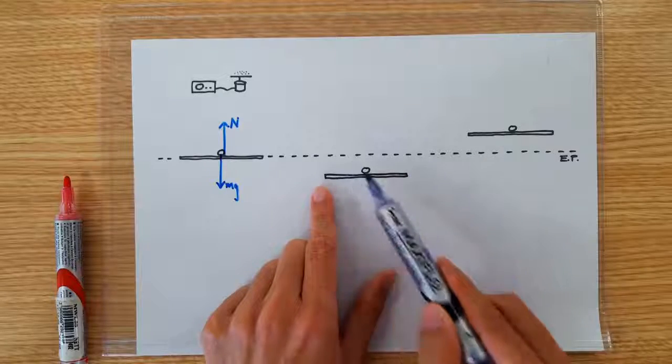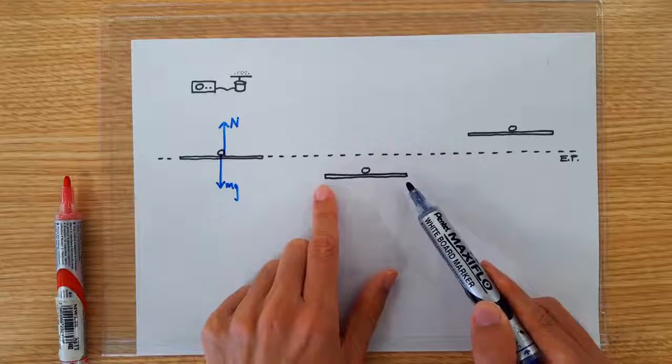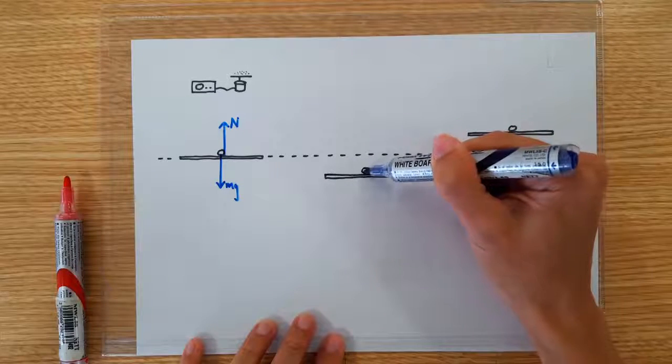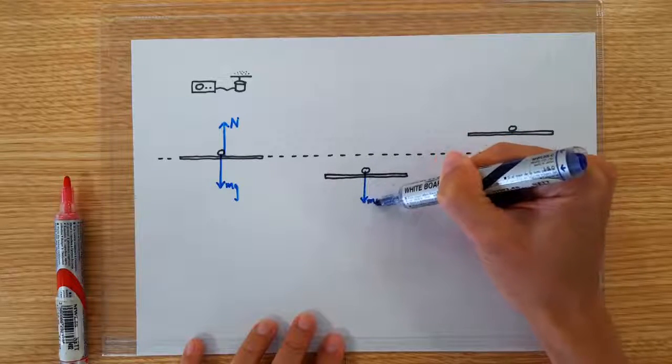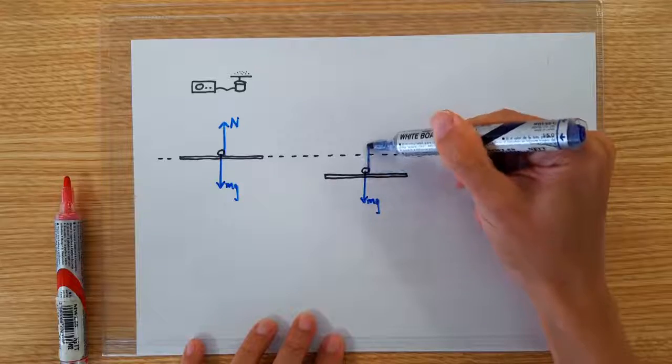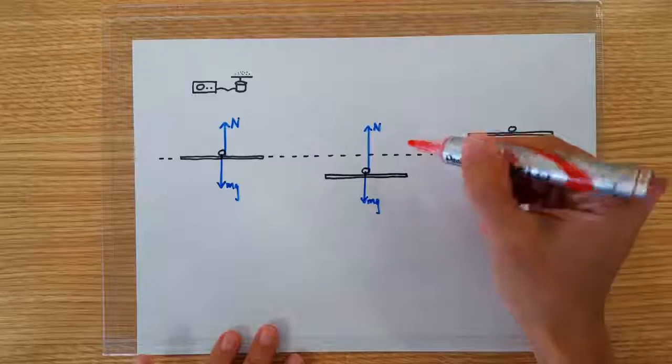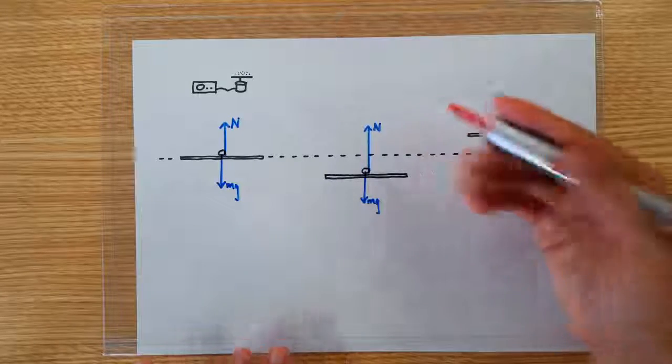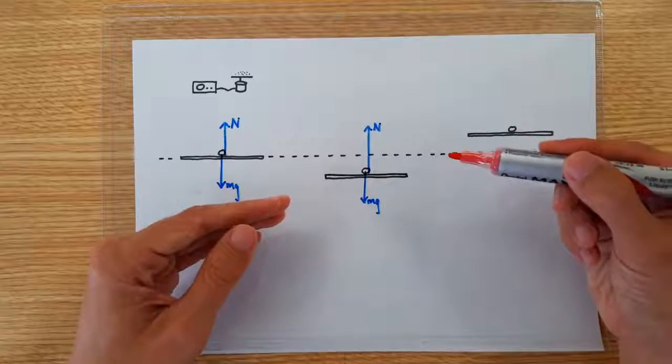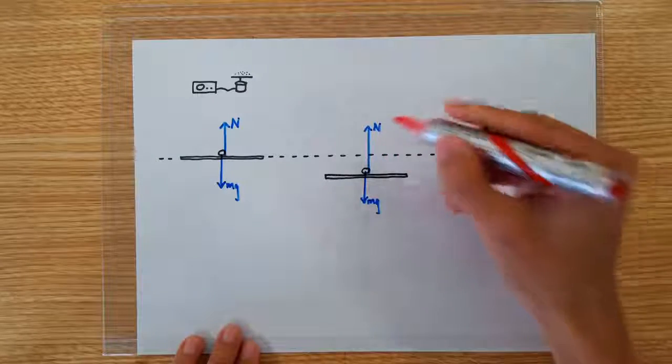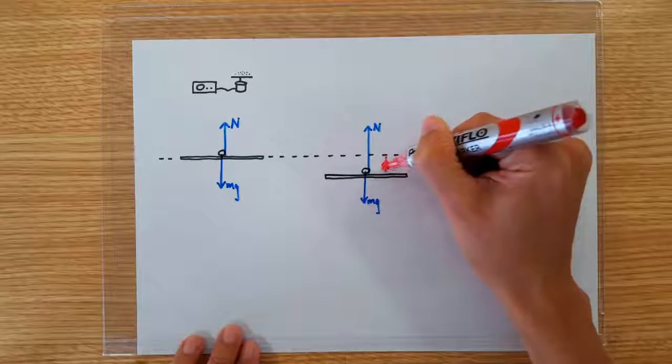However, if the plate is displaced below the equilibrium position, then we know that the normal contact force is going to be larger than the weight. The reason is because we know that for SHM, the displacements and accelerations are always opposite in direction. So if you are displaced downward, the acceleration has got to be upward.